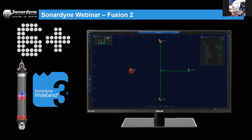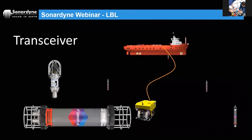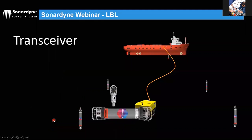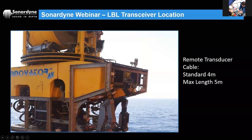We offer training for both. If you've already done Fusion One training, we can do a one-day Fusion 2 top-up course — it's that intuitive. Now, the transceivers: the key transceiver used in LBL systems is the ROVNav — the ROV Navigator. It comes in two parts: the bottle containing processing power and comms, and the transducer element on a cable. Both are installed on the ROV.